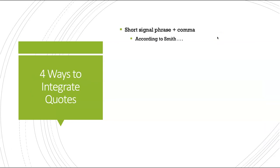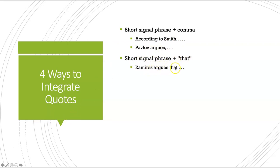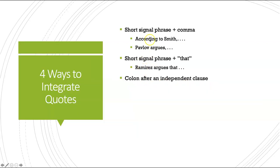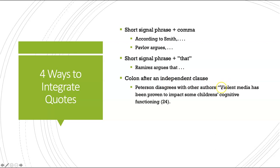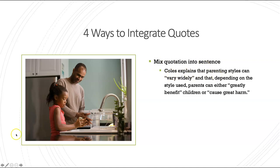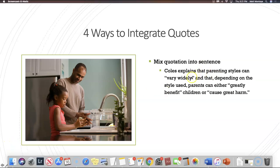So those are the four ways to integrate quotes. One: use a short signal phrase and a comma. Two: use a short signal phrase and the word 'that.' Three: use a colon after an independent clause. Four: mix the quotation into the sentence, quoting the author's exact words with the rest paraphrased. Remember the capitalization rules: if there's a comma, start the quote with a capital letter; if there's 'that,' use a lowercase letter; if there's a colon, leave it however it was originally. Those are the main building blocks you need to integrate a quotation.